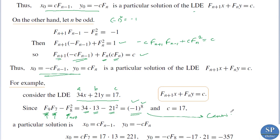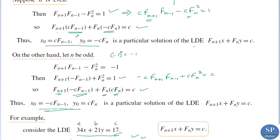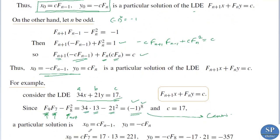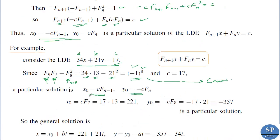Here we have c equal to 70. From our earlier analysis, when n is even the particular solution is x₀ equal to c times fn-1 and y₀ equal to minus c times fn. So here x₀ equals c times f7, and since c equals 70... wait, here c equals 17 — so 17 times 13 equals 221, and y₀ equals minus c times f8, that is minus 17 times 21, which is minus 357. So the particular solution is x₀ equal to 221 and y₀ equal to minus 357.